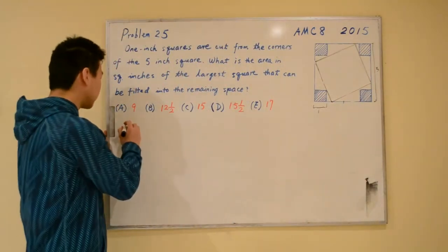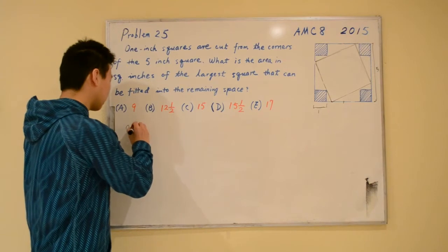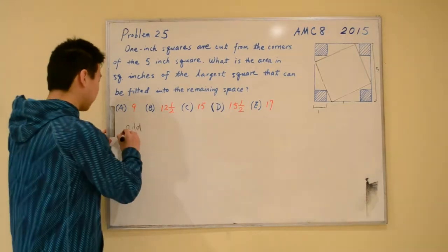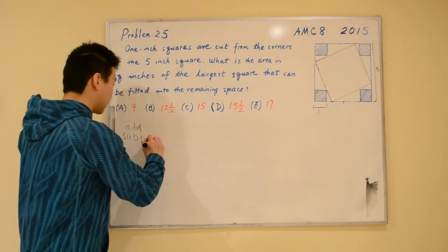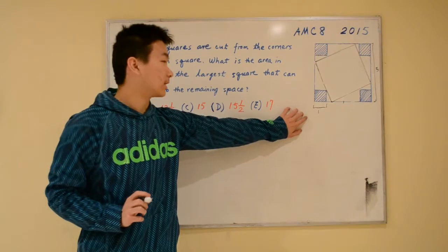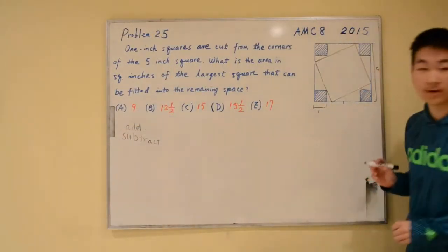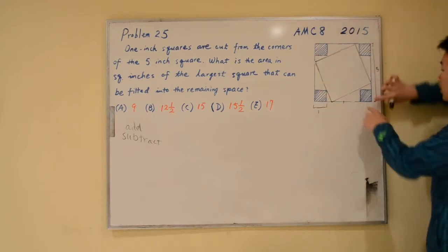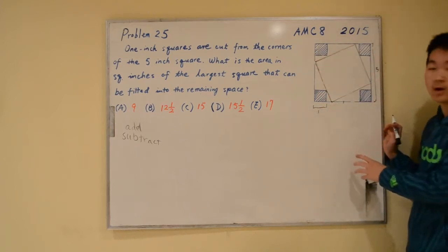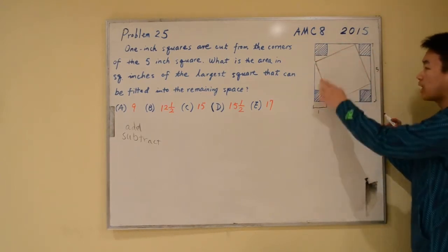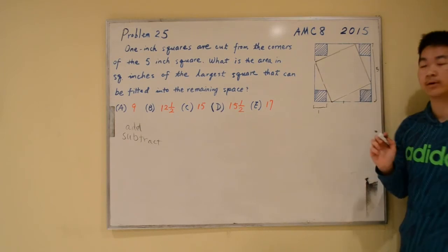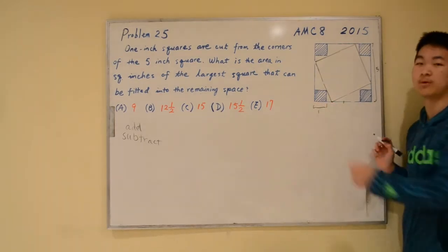The first approach is addition, where we add together convenient areas. We can also do subtraction, where we subtract convenient areas. The most intuitive way is subtraction because it's very easy to find the area of the big blue square — it's just 5 times 5 equals 25. Once we have that, we subtract the areas of each of these four triangles. Because of symmetry, each triangle has the same area, so we just find one and multiply by 4.